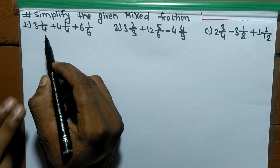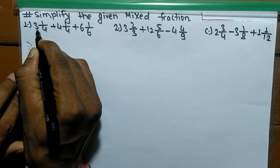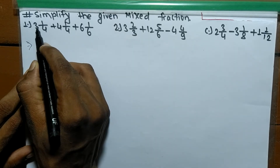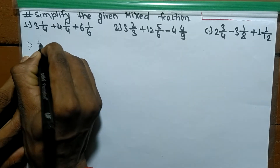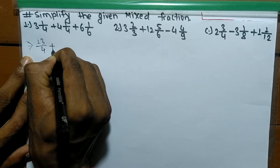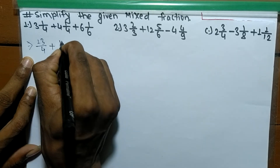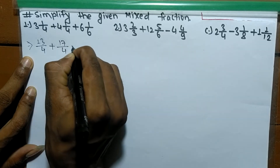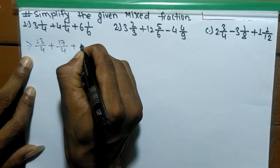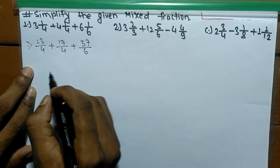To convert to improper fractions, we multiply both numbers and add with the numerator. So 4 times 3 means 12 plus 1 means it is 13 by 4, plus 4 times 4 means 16 plus 1 means it is 17 by 4, plus 6 times 6 means 36 plus 1 means it is 37 by 6.